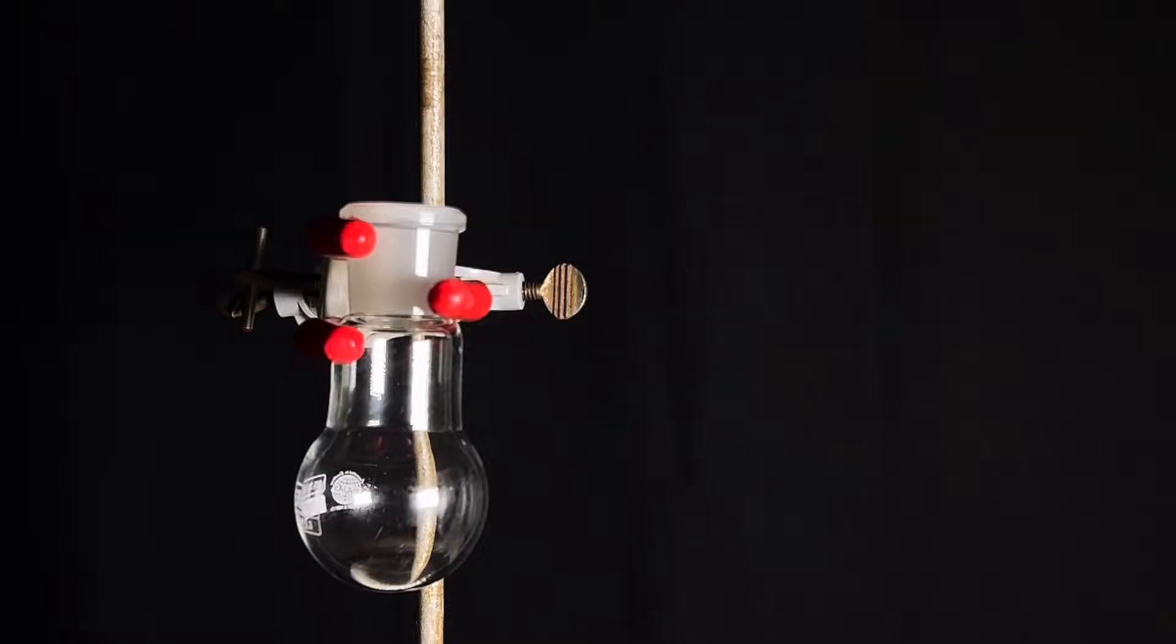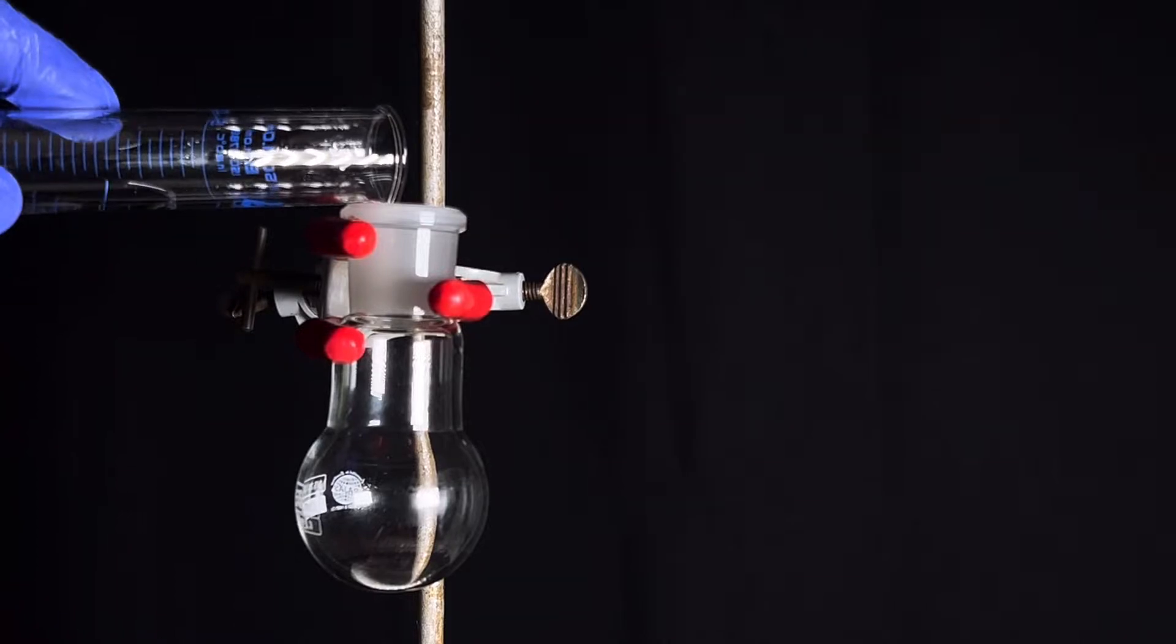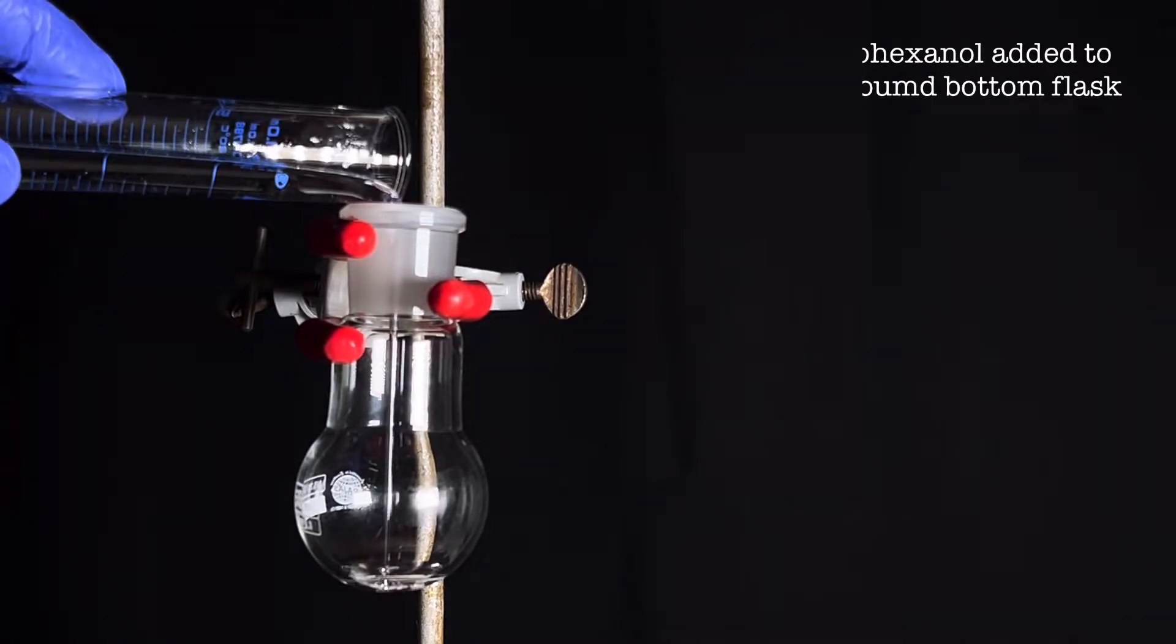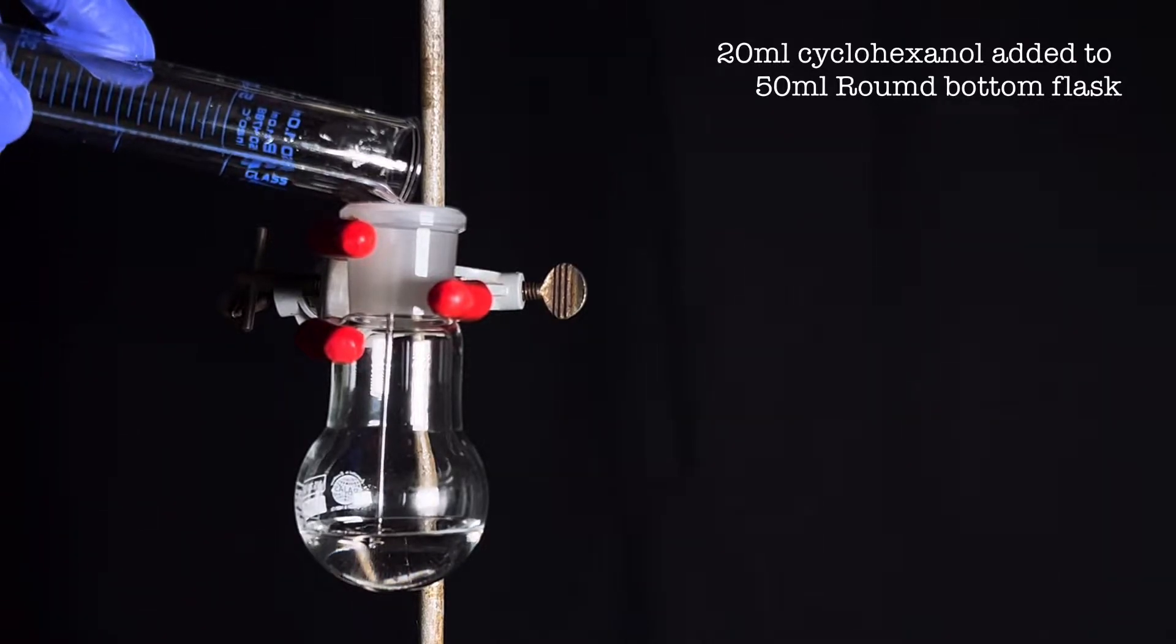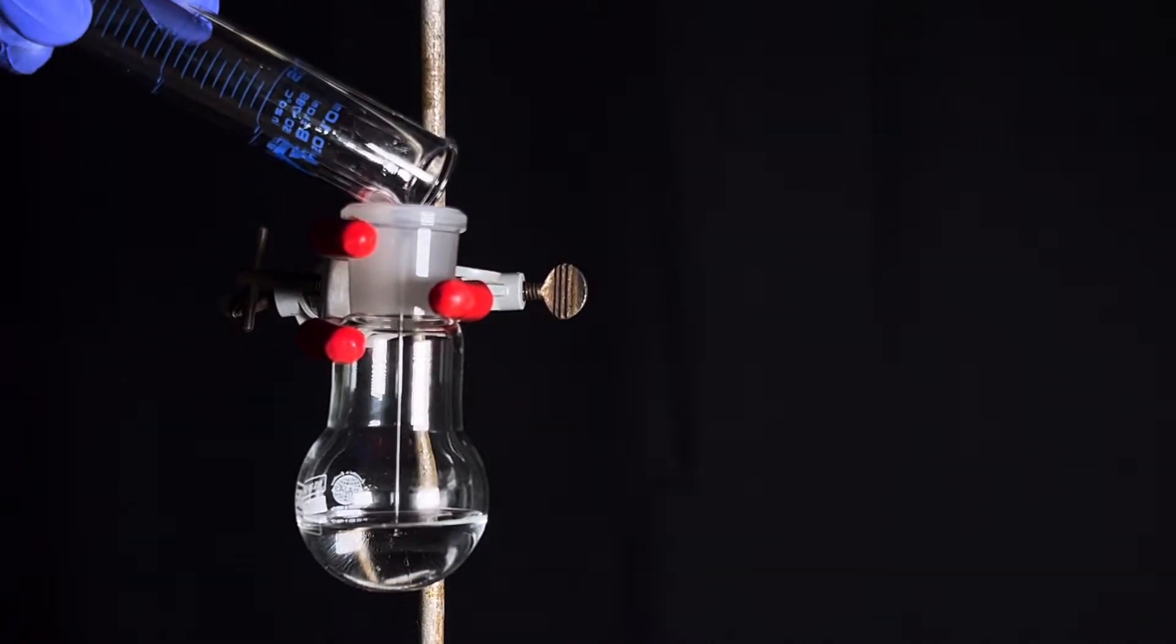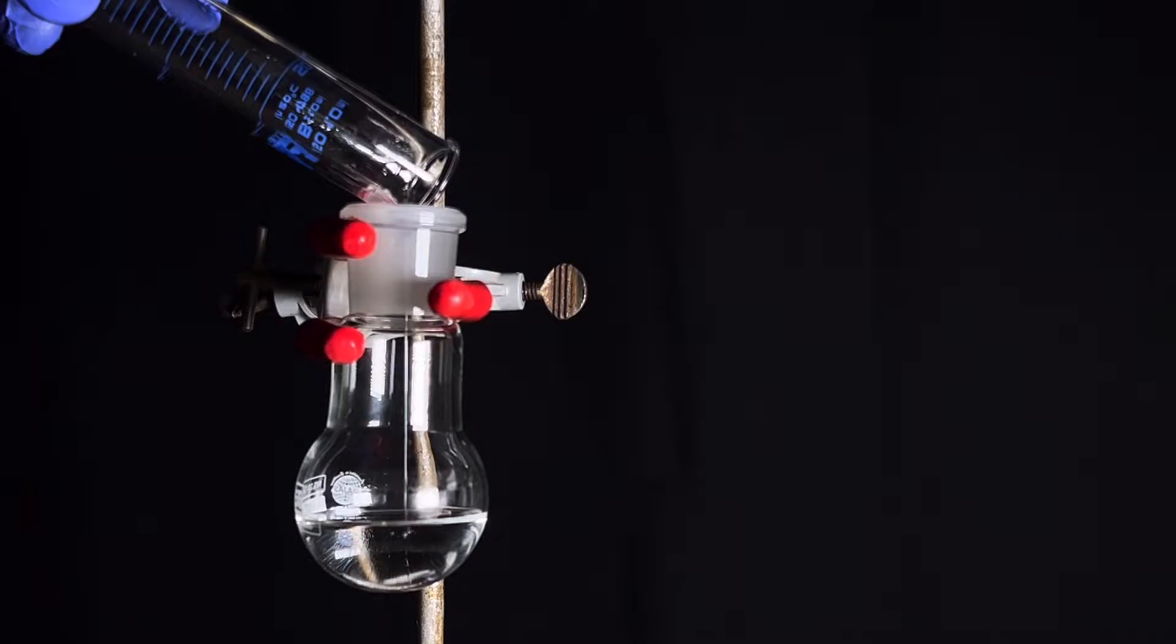Start by fixing a 50 ml round bottom flask on a stand using a clamp and transfer 20 ml of cyclohexanol to it. Make sure that the round bottom flask is dry before transferring the cyclohexanol.